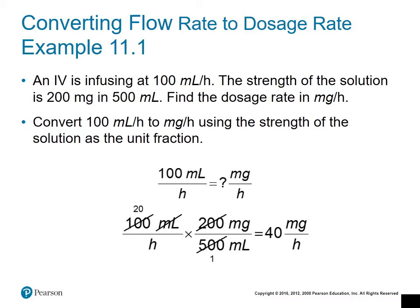We're going to find the dosage rate in milligrams per hour — converting our flow rate of 100 milliliters per hour to milligrams per hour. We're not changing the time units, but we are converting milliliters to milligrams by multiplying by the strength. We put the milliliters in the denominator so they divide out, leaving us with milligrams per hour. This ends up as 40 milligrams per hour — that's our dosage rate.